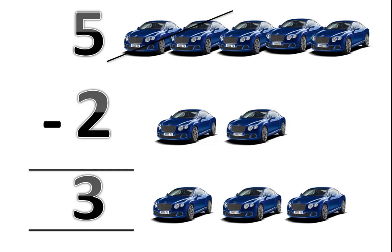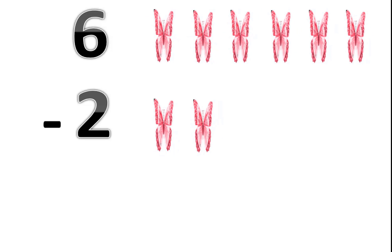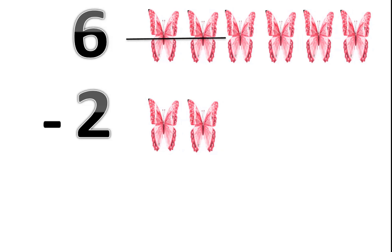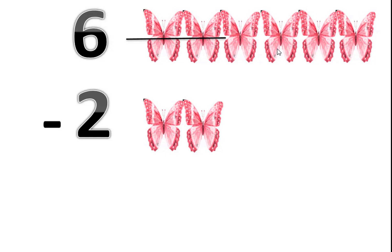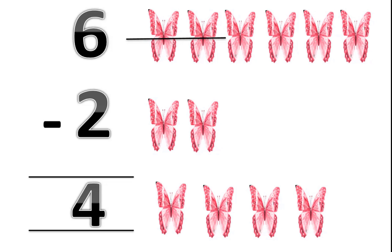Let's move. 6 butterflies minus 2 butterflies. So how many butterflies are left? Let's count: 1, 2, 3, 4. 6 minus 2 equals 4. 4 butterflies.